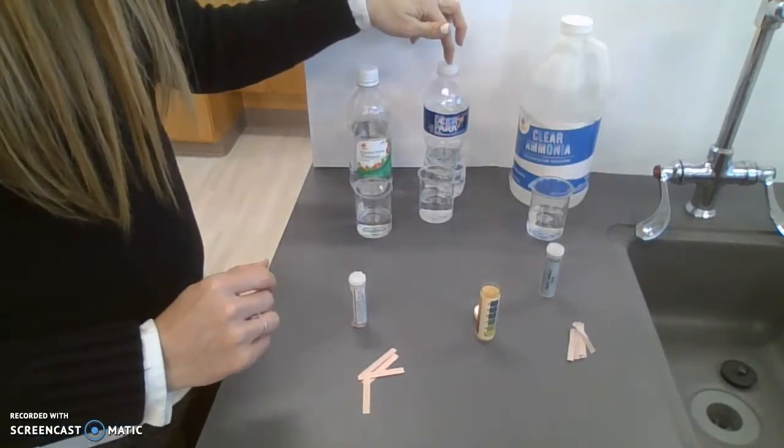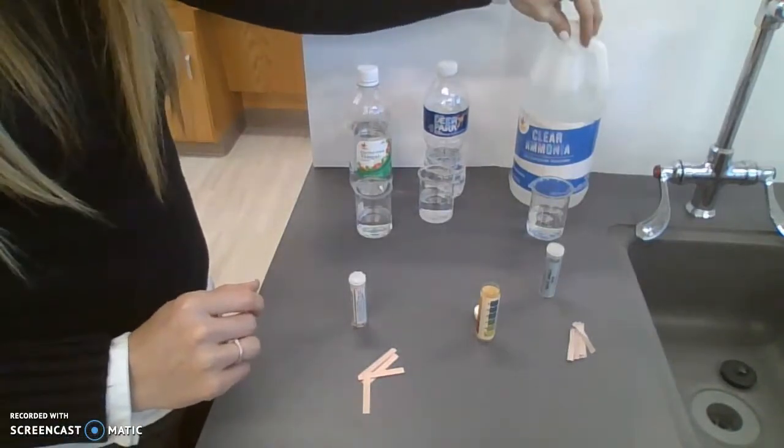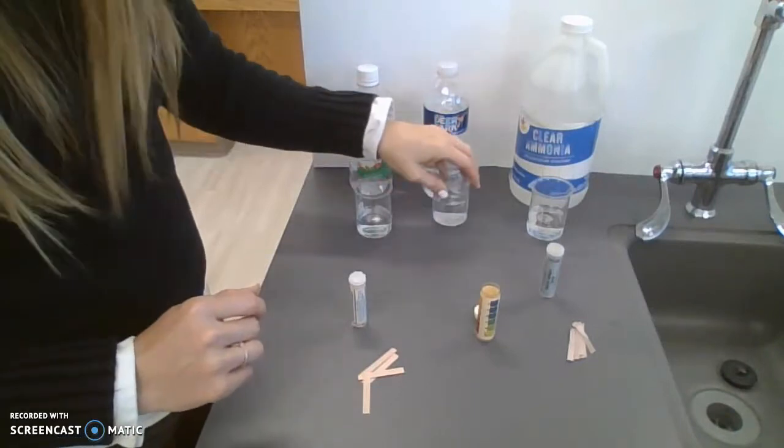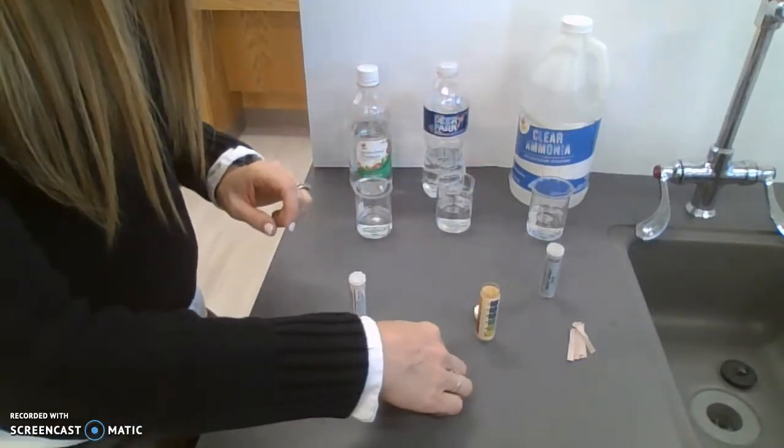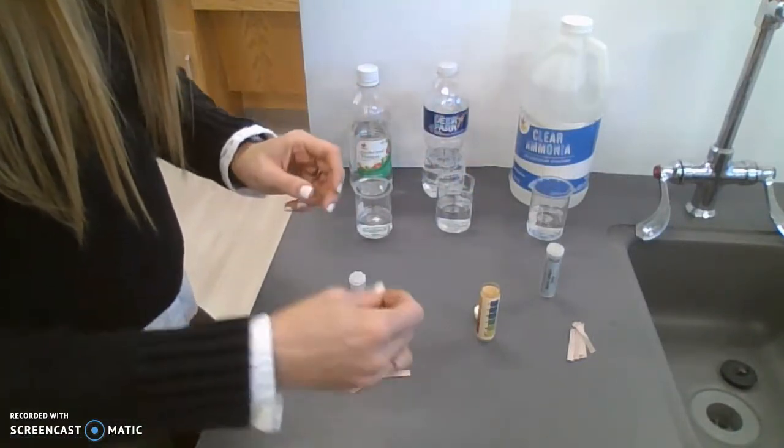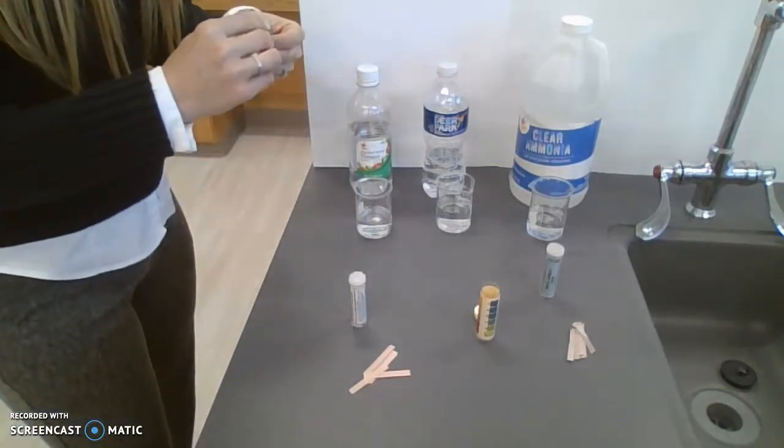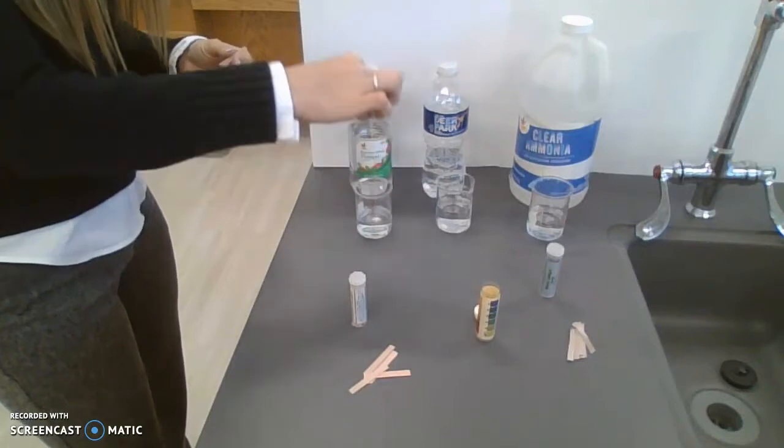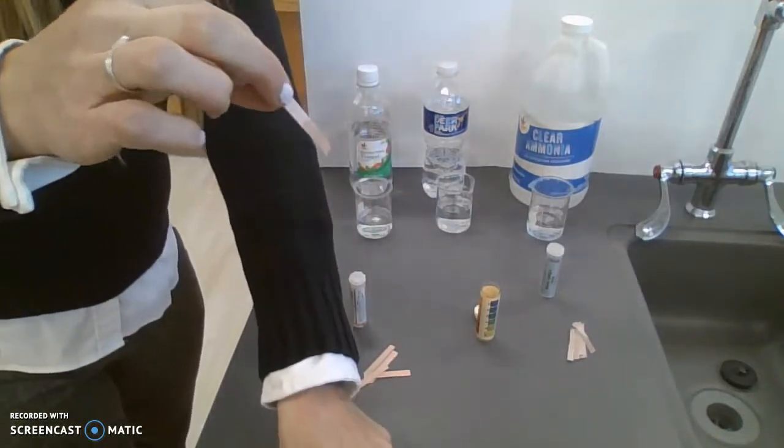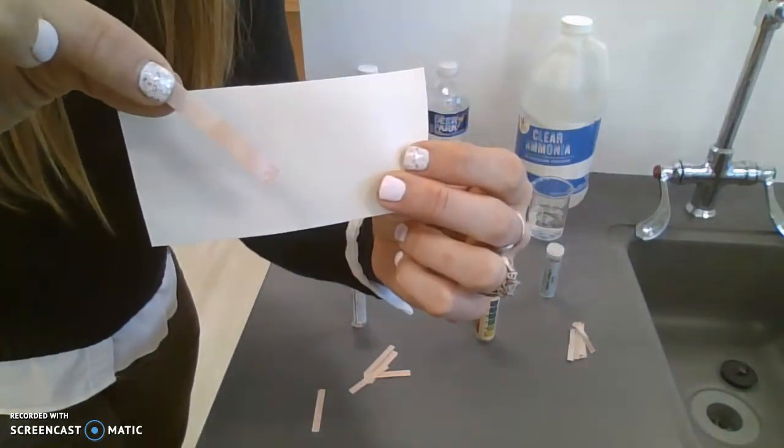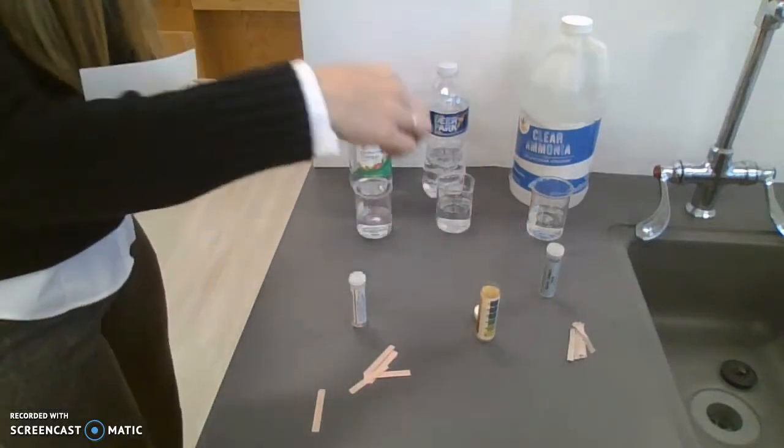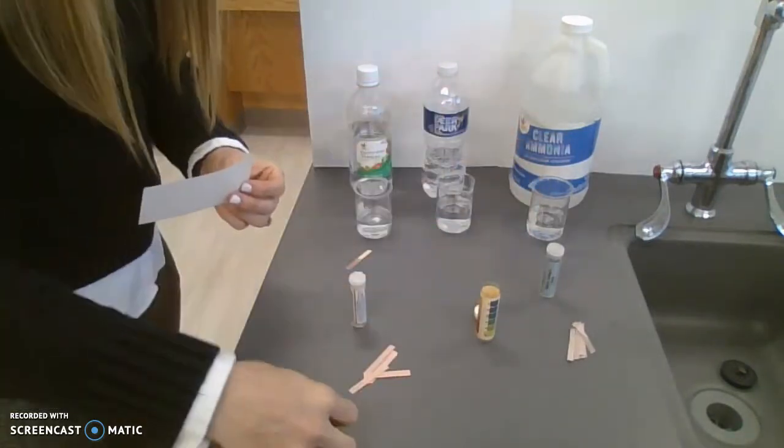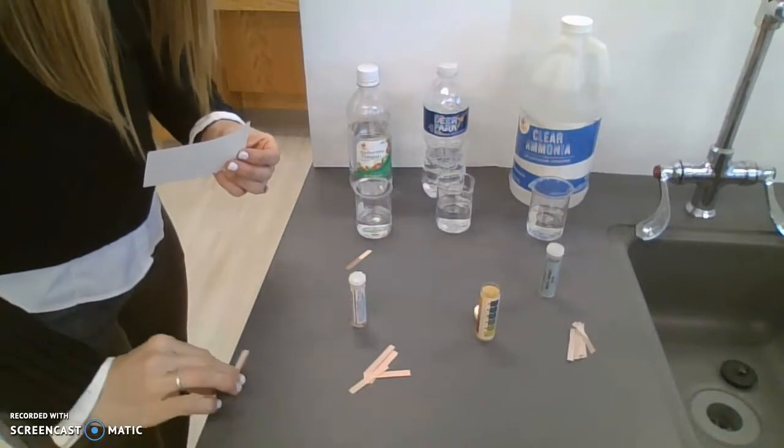Okay, litmus turns red in the presence of an acid. With red litmus paper in acids like vinegar, it doesn't really appear to do much; it just mainly looks wet. But you'll see when we test blue litmus paper that it does change.